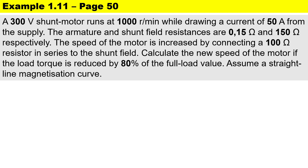In this calculation for N5 Electro Techniques, we will be looking at DC motor speed control. This is example 1.11 on page 50, and the example reads as follows: a 300 volt shunt motor runs at 1000 revs per minute while drawing a current of 50 amperes from the supply.